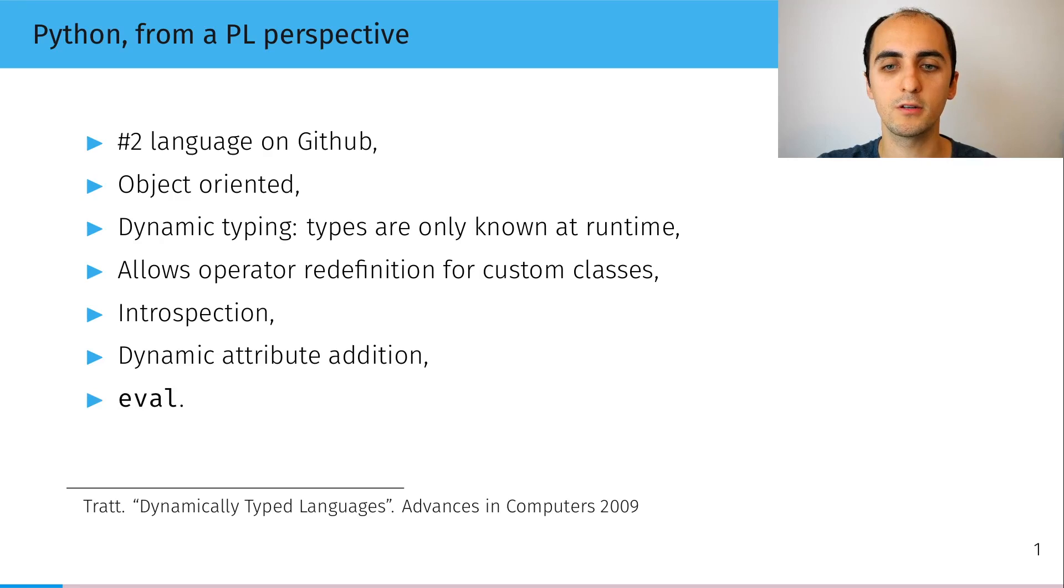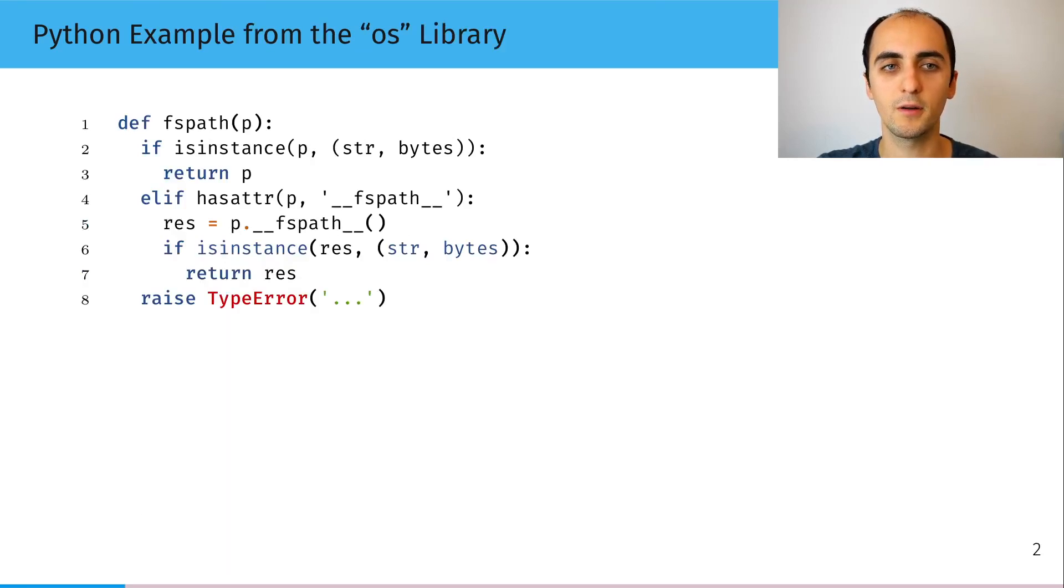For more on dynamic programming languages, you can check Lorenz Trass's review. So let's take a look at an example program taken from the standard library. This function fspath takes as argument p.